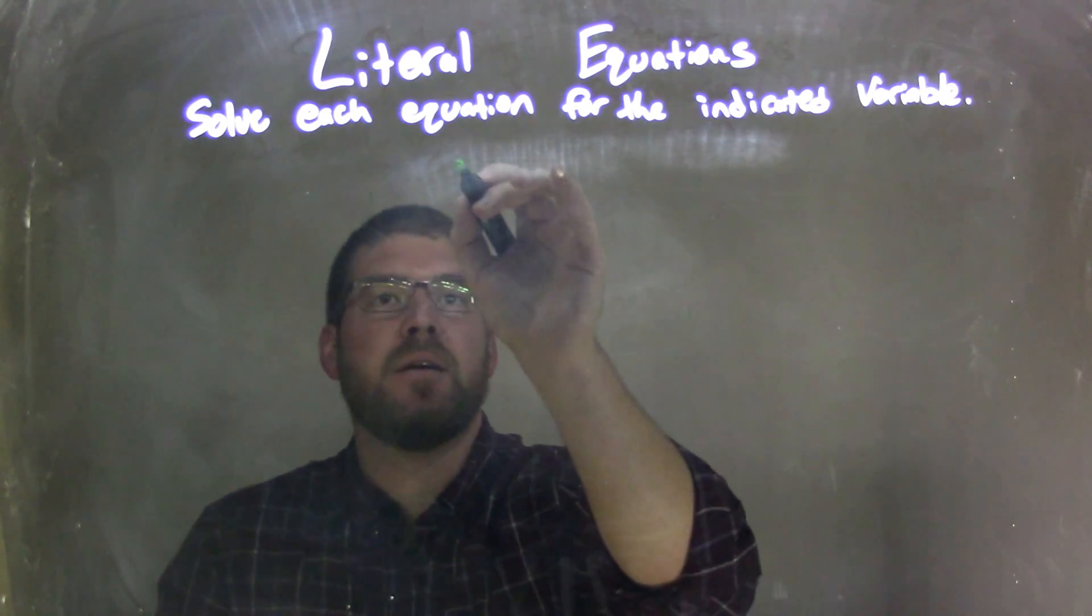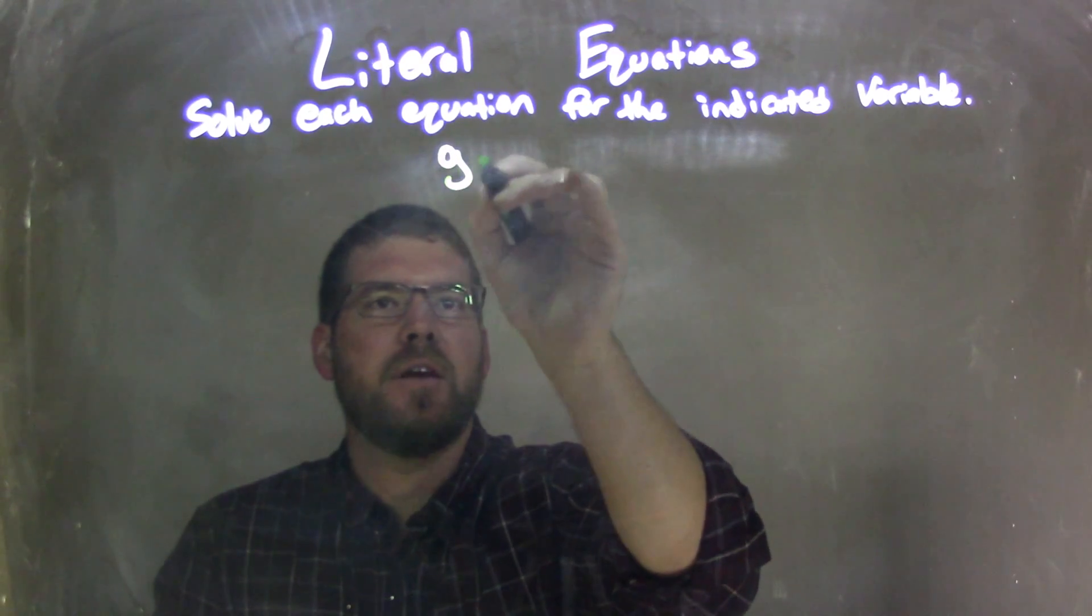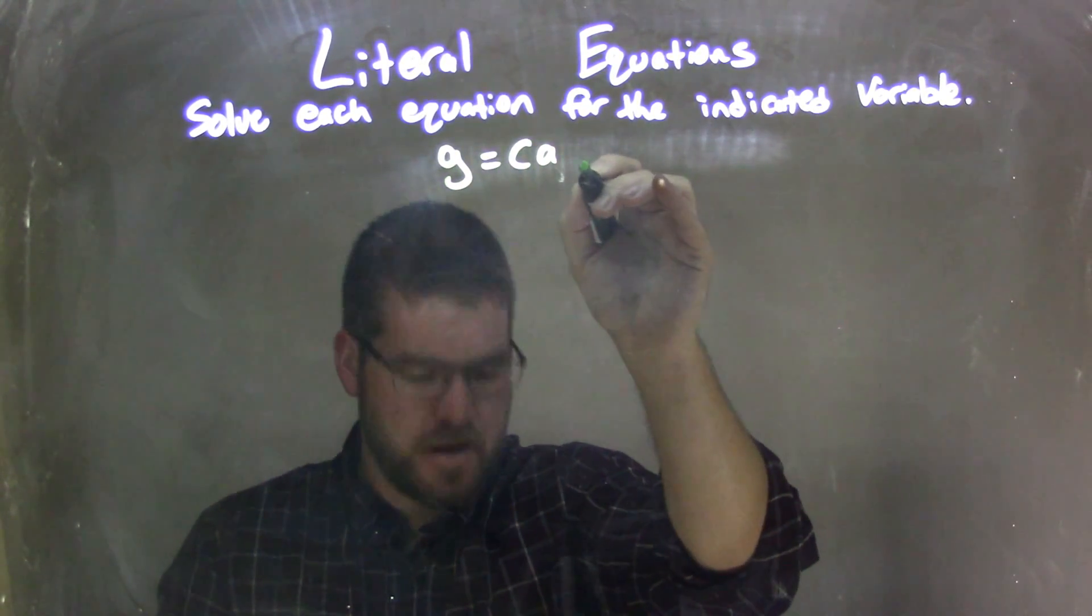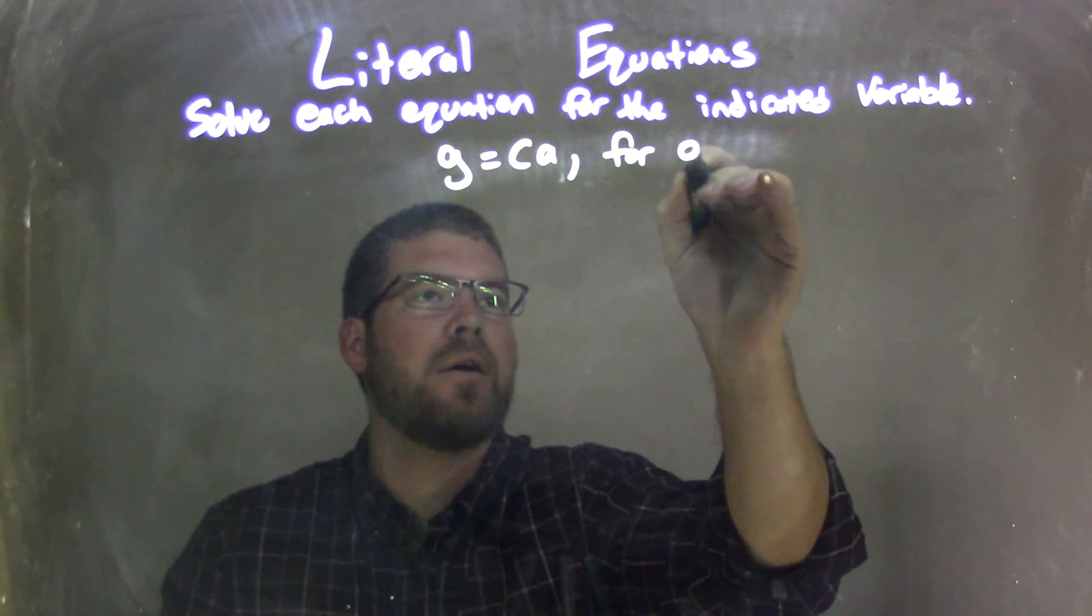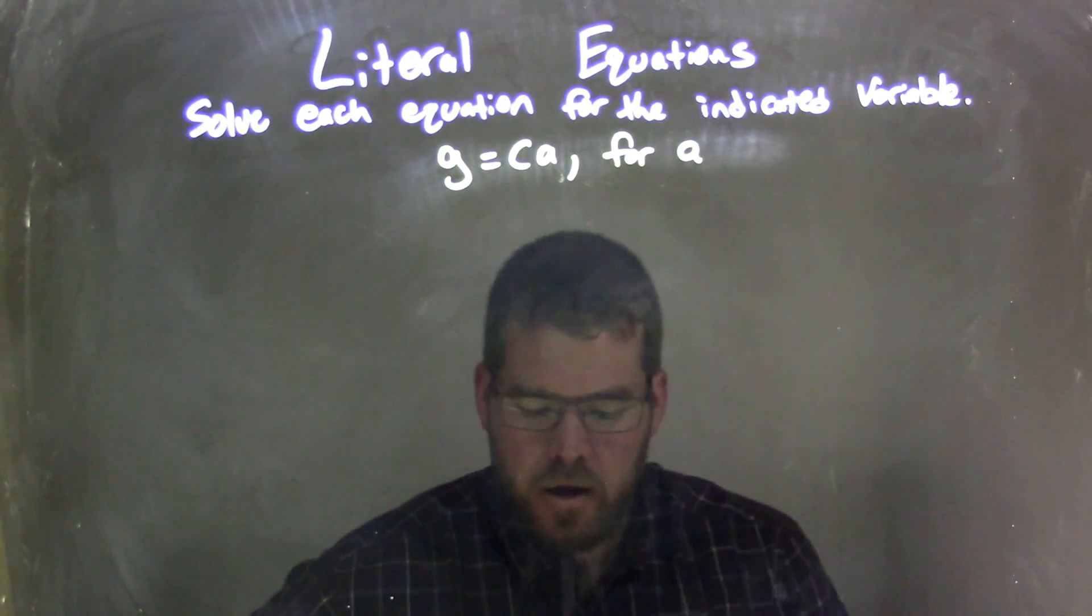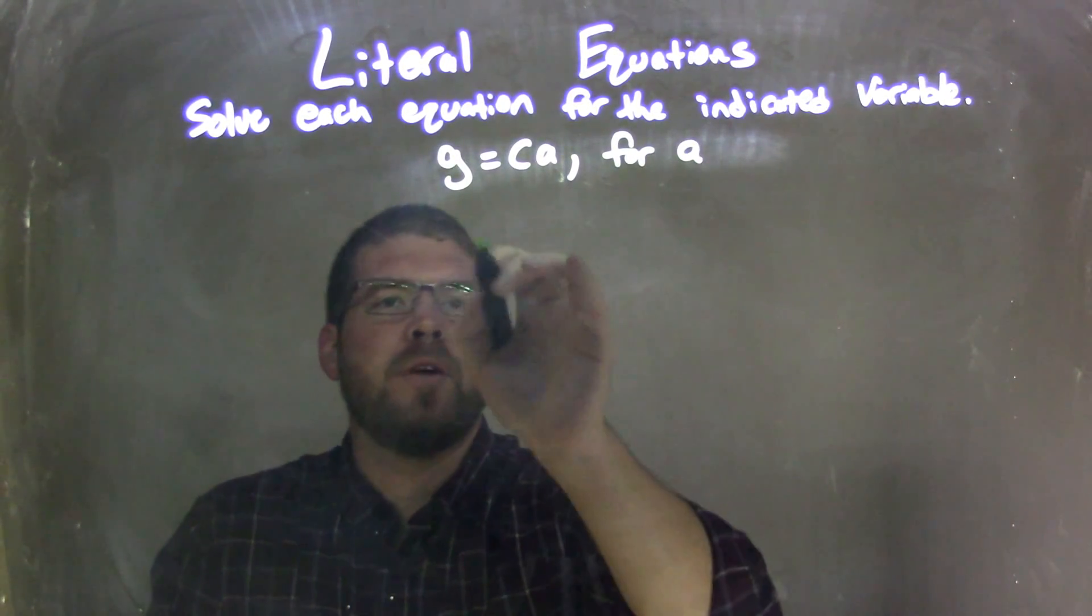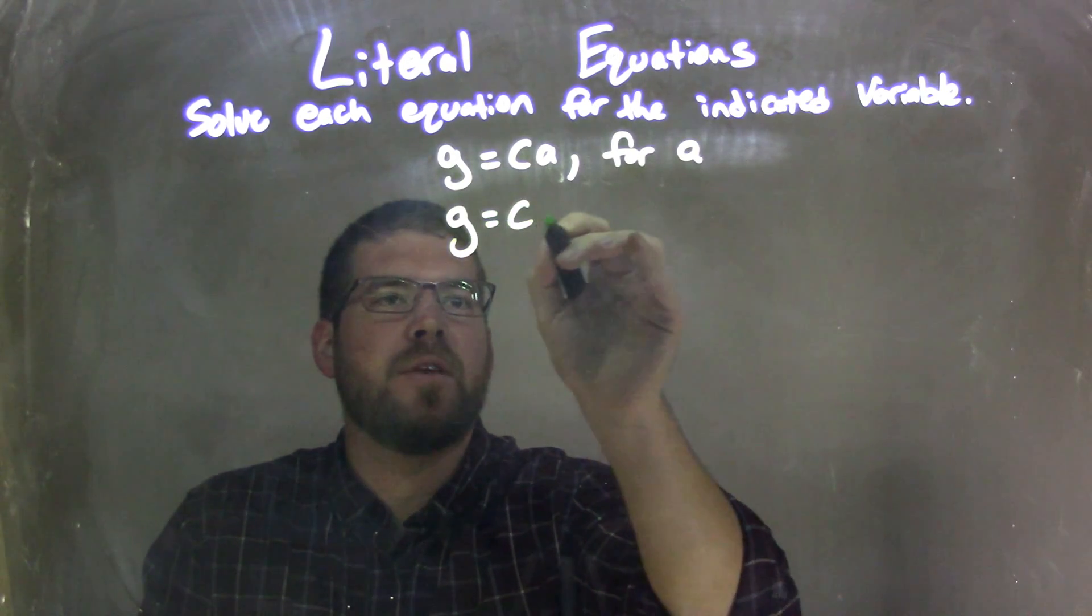So if I was given this equation, G equals CA, and I needed to solve that for the variable A. So if I need to solve that for A, I'm going to rewrite my equation, G equals CA here.